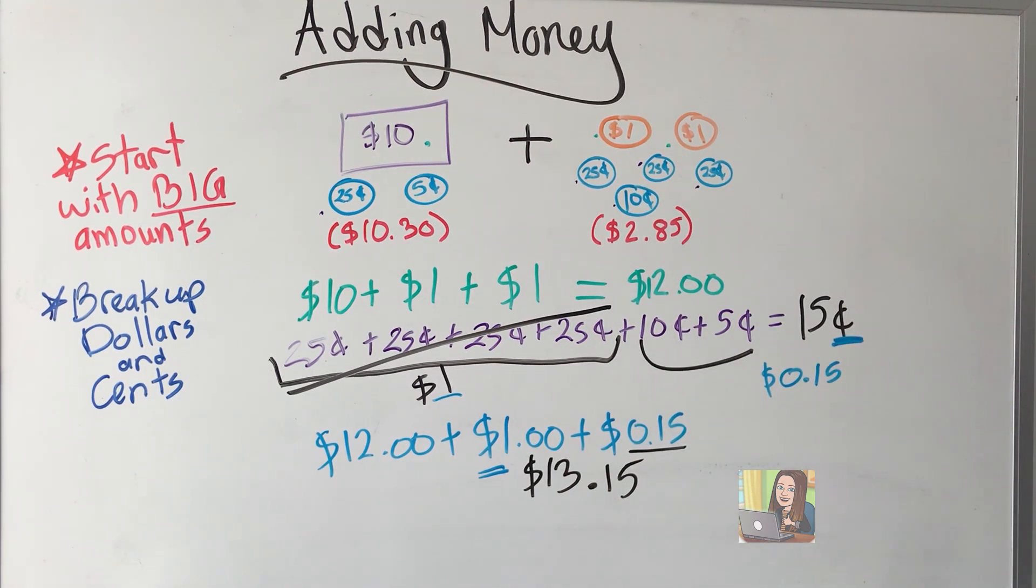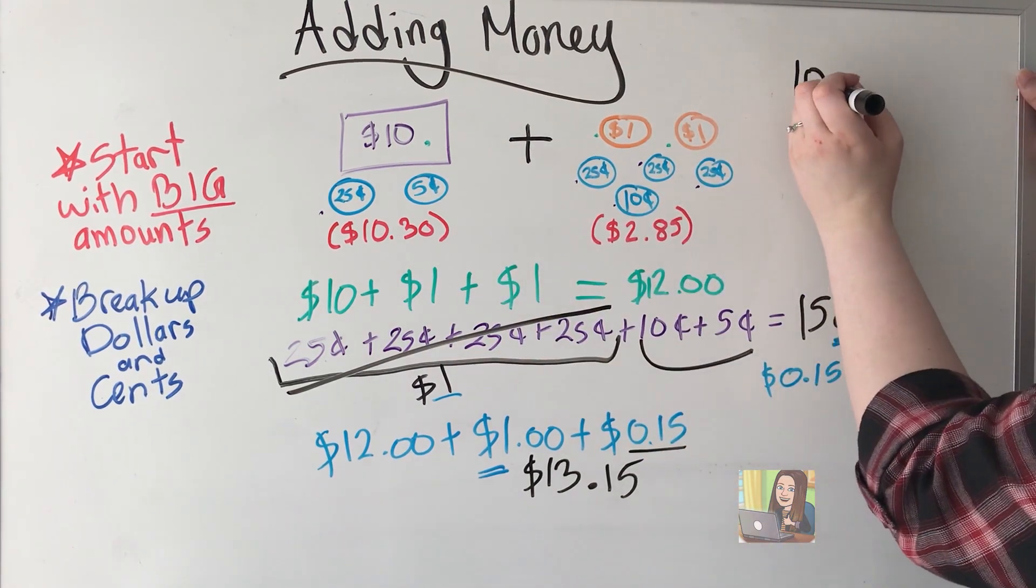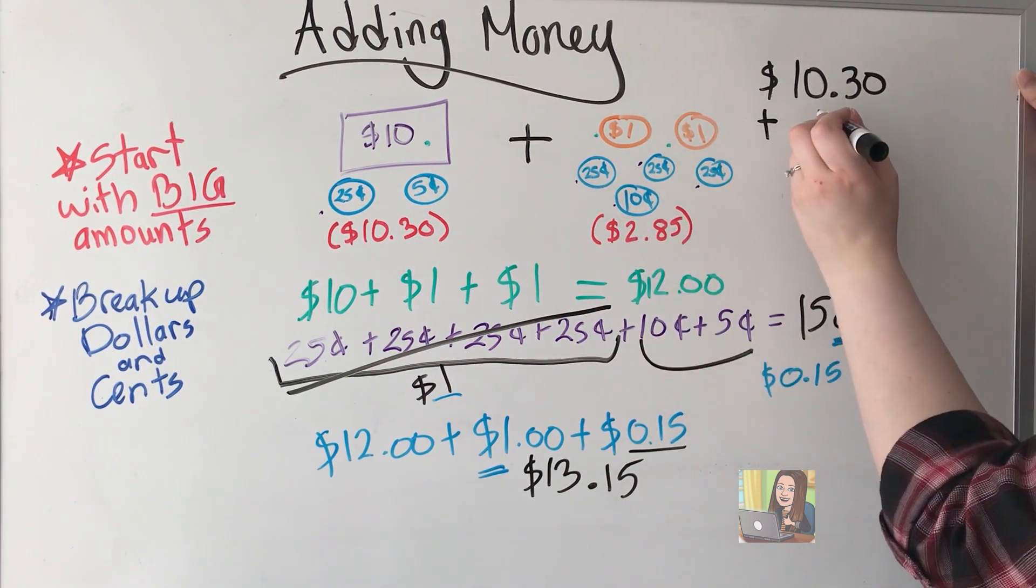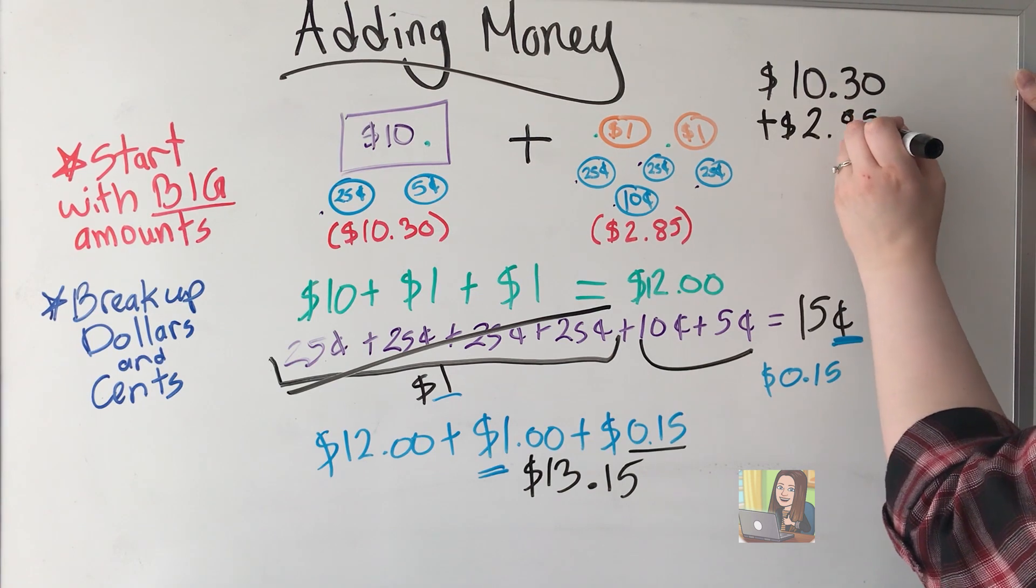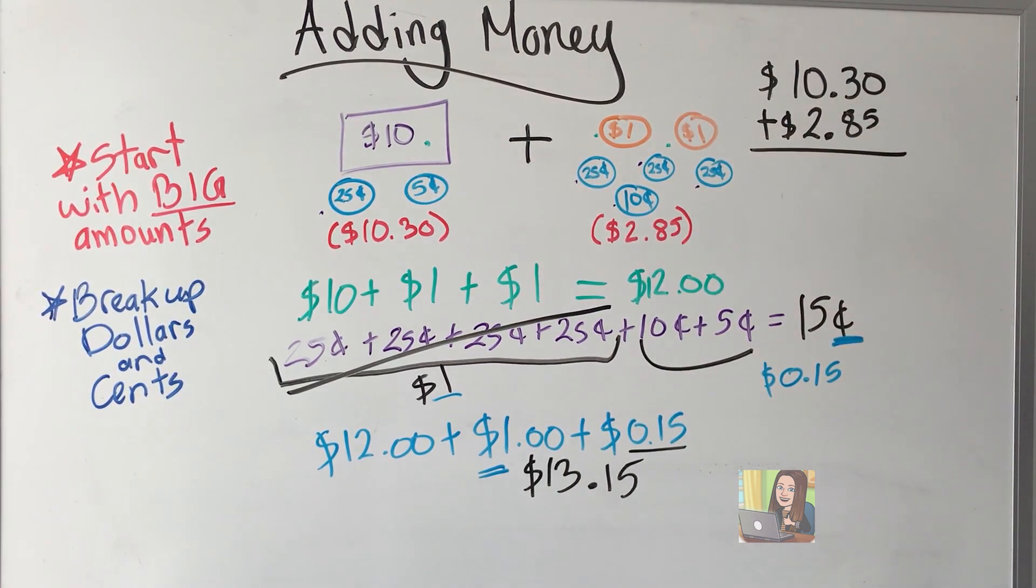Let's double check. I know you like to stack it. Go up to our beginning again. $10.30 plus $2.85. Notice that I have lined up my decimals. That is important.